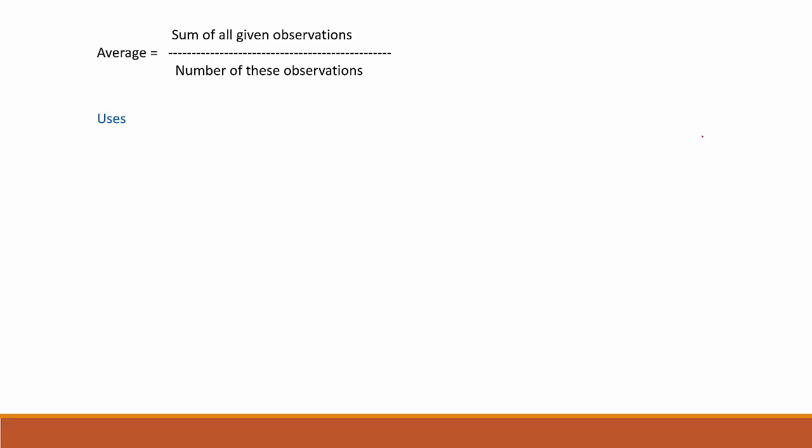So now you know what average is — but why do we need to learn it? What are its uses? First, when you want to compare something with that of a group, you need average. For example, with the giraffes, the average height was eight feet. If you want to compare a giraffe's height with the group, you can say its height is above average, meaning above eight feet. Second, to get a general idea of a group — for example, temperature. If you are going to London for a holiday and they say the average minimum temperature in November is two degrees, you will know to pack more warm clothes.